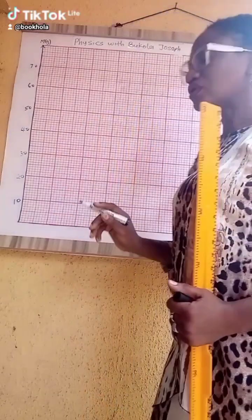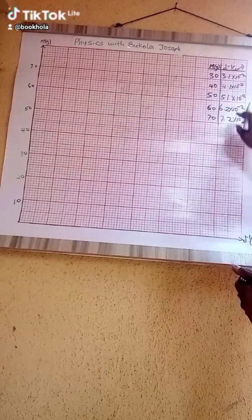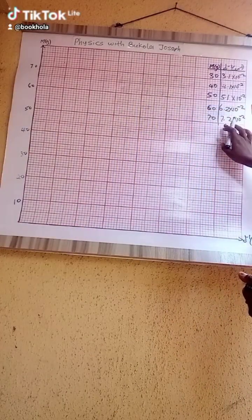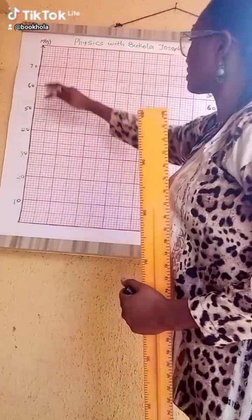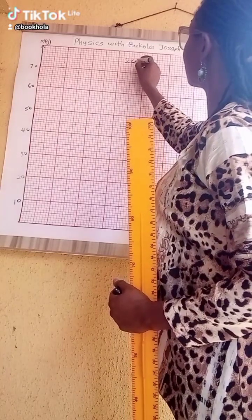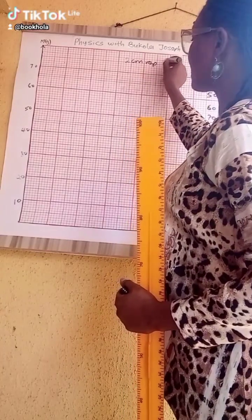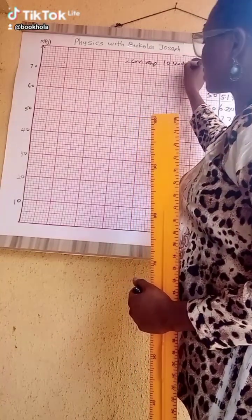Okay, so now this other side, we have 3.1 and the axis is 7.1. Let's see if we do... So now it means on this side we have two centimeters represents 10 units. We have 10 units, look at it.